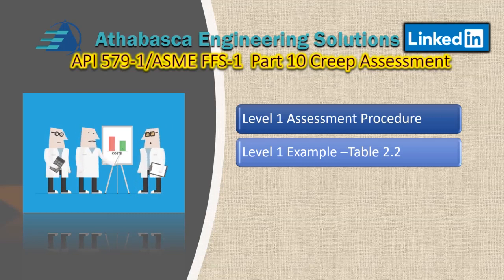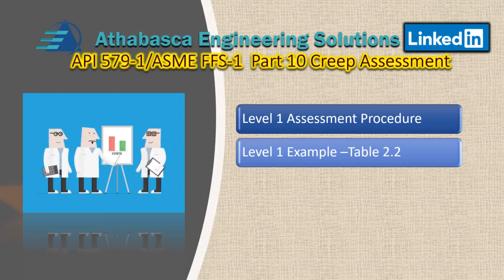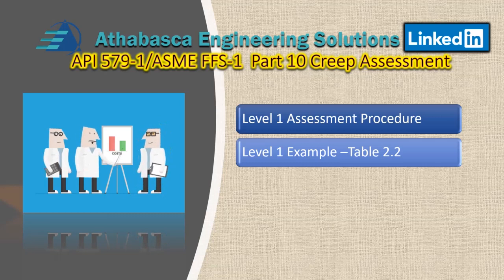We're going to use ASME FFS Part 2, which is the example specification. There are five examples in Part 10 and we're going to look at the first one. We're going to use Table 2.2, a very important table found in Part 2, which I call the roadmap — the part of the document where you organize and provide an analysis of what mechanism applies.